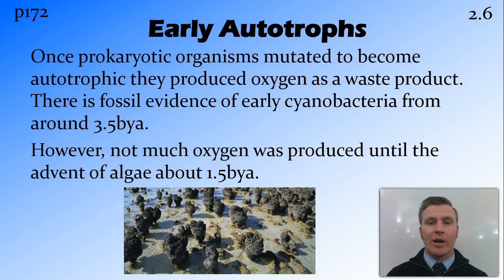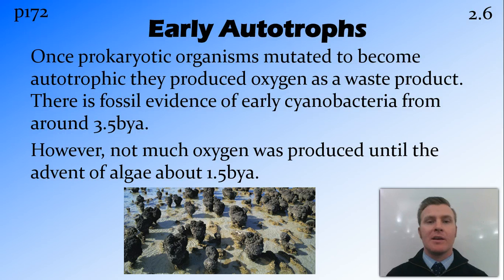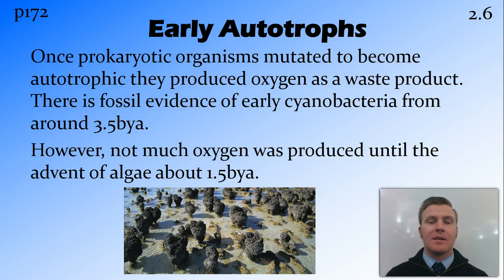The earliest record we have of these autotrophs are cyanobacteria. Cyanobacteria have a very primitive form of photosynthesis, and fossilised evidence of cyanobacteria in stromatolites dates back about three and a half billion years — a very long time ago. They were only producing a relatively small amount of oxygen though, and it wasn't until algae evolved that the atmosphere went from the anoxic to the oxic state.